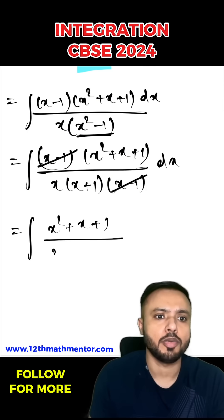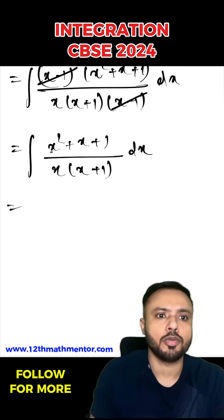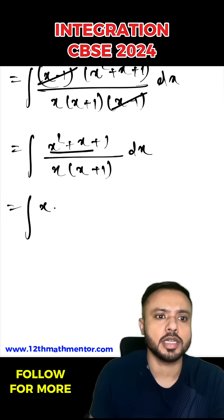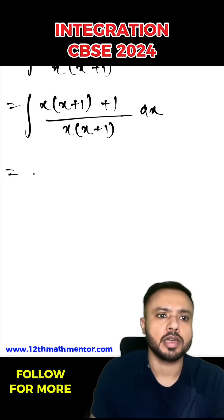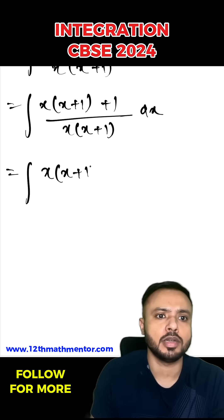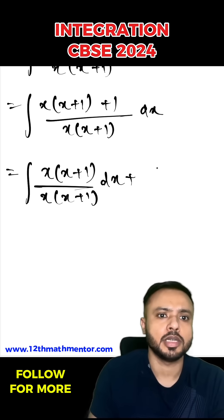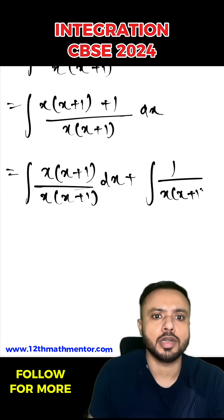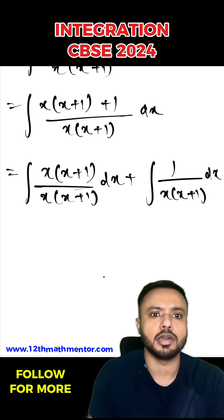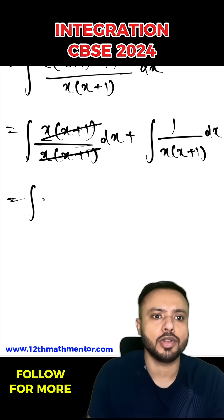From the numerator, I'll take x common from the first two terms, writing it as x(x + 1) + 1 all over x(x + 1) dx. I can then separate this as x(x+1)/[x(x+1)] dx plus 1/[x(x+1)] dx. The first fraction simplifies to 1, so I'm left with ∫dx plus ∫1/[x(x+1)] dx.